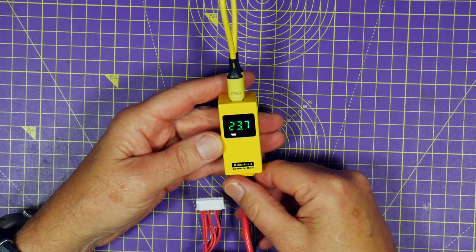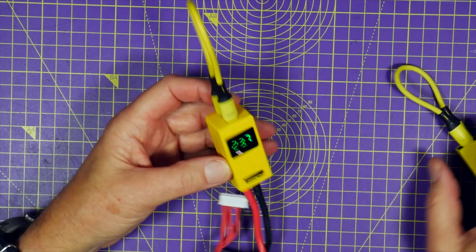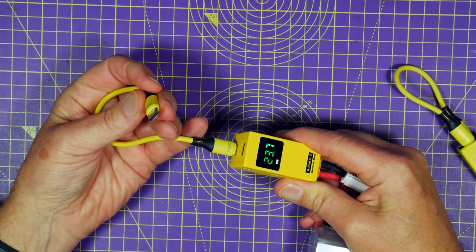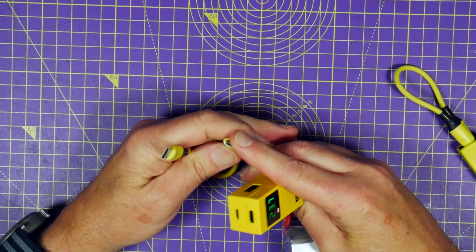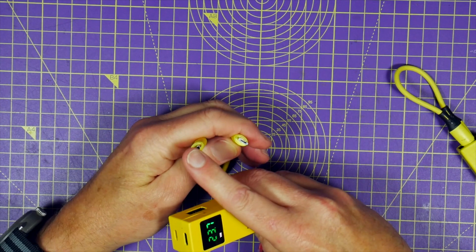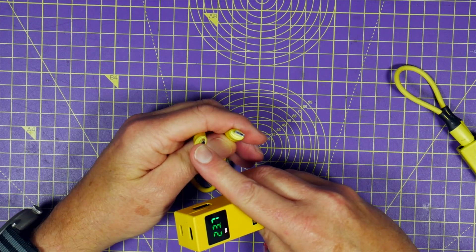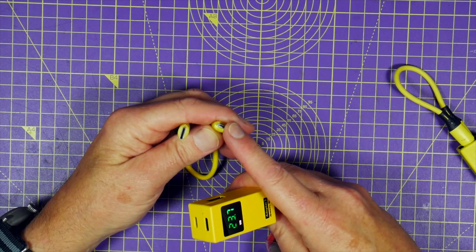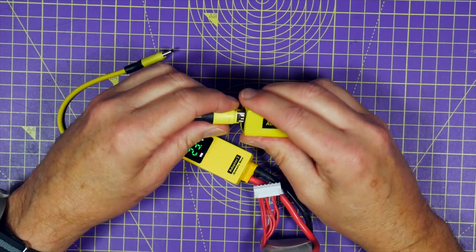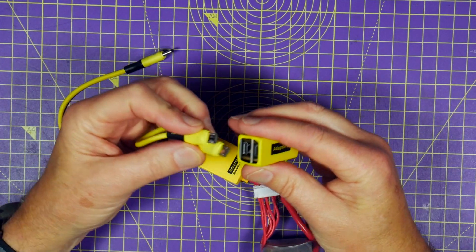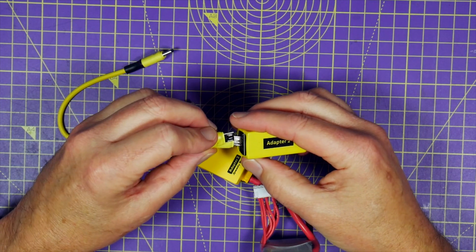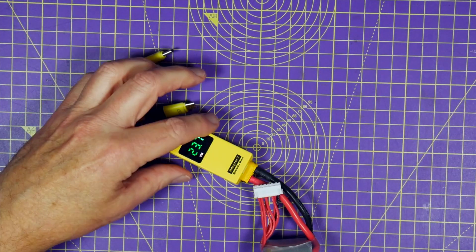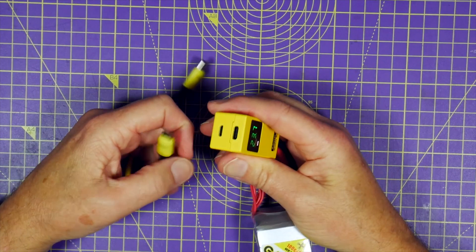One thing they've done that's a significant improvement over the version 2 is this double header cable. The cable has got a micro USB on one end and a USB-C connector on the other. So it doesn't matter if your flight controller has got micro USB or USB-C, you just plug in whichever end you want. The previous one had this micro USB on both ends and I was always using an adapter when I had a flight controller that's got USB-C.